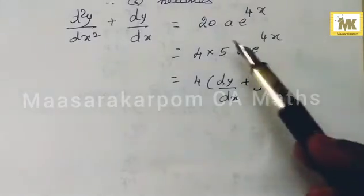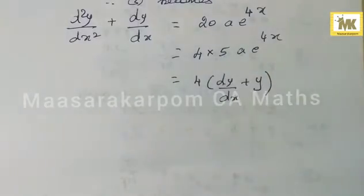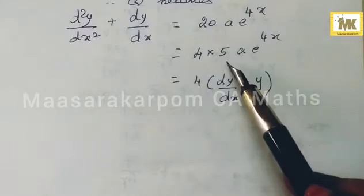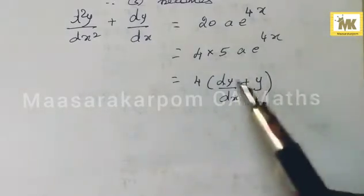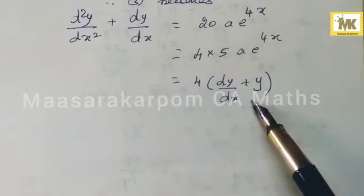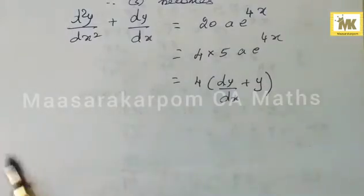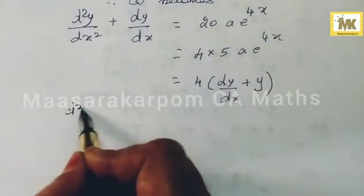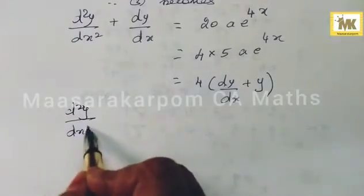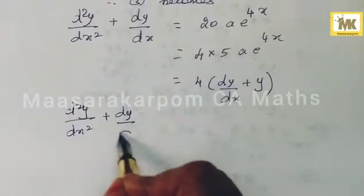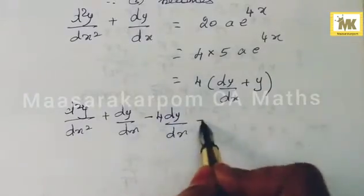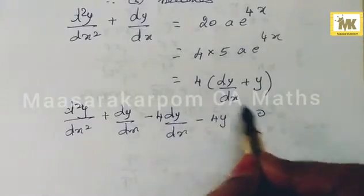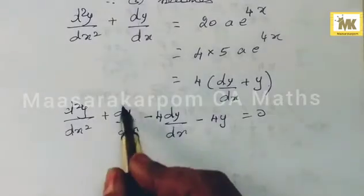Bring this in terms of this: minus 4y equals 0. Multiply and simplify - you can reduce.